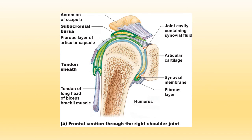On this slide we are looking at a frontal section through the right shoulder joint. Since this is the shoulder joint, we have the humerus — the bone of the arm — and the head of the humerus articulates with the glenoid cavity on the scapula. Seen superior to the shoulder joint is the acromion process of the scapula. What you should point out from this image are several bursa and a tendon sheath. Inferior to the acromion process is the subacromial bursa to reduce friction. We also see a tendon sheath wrapping around the tendon of the long head of the biceps brachii muscle. The purpose of tendon sheaths and bursa is to reduce friction in tight spaces where bones, muscles, or ligaments may rub against each other.